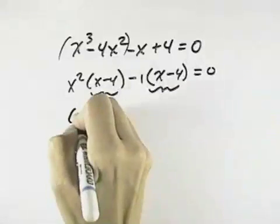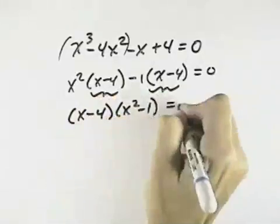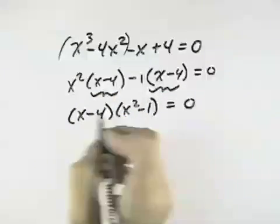So I can see now the common factor of x minus 4. So I can pull the x minus 4 out, leaving x squared minus 1. Now it's not factored completely because this one is the difference of squares.